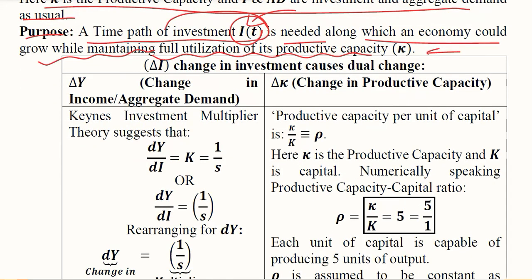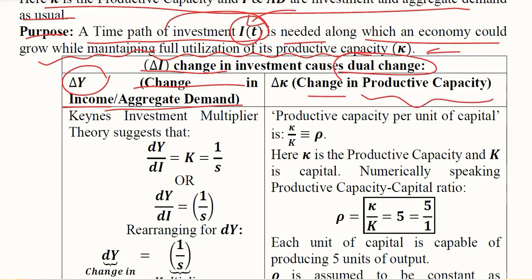To achieve this, we have to observe the effect of the change in investment on both sides — the demand side and the supply side — which gives rise to a dual change. The change on the demand side, or income, is represented by ΔY, and the change on the supply side, or the productive capacity of the economy, is represented by Δκ.